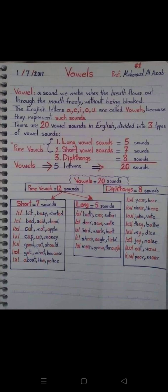Short vowel O (ɒ) sound: got, what, because. Schwa sound: about, the, police. Long vowels.